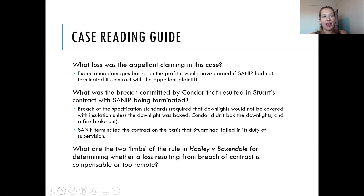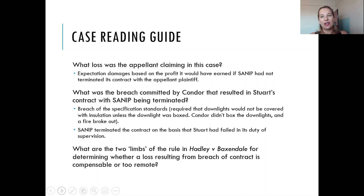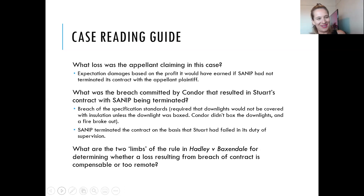What are the two limbs of the rule in Hadley and Baxendale for determining whether a loss resulting from a breach of contract is compensable or too remote? The first limb is if the loss arises naturally according to the usual course of things. The second limb is if the damage was supposed to have been in the contemplation of both parties at the time they made the contract — dealing with special circumstances known to the parties that bring the loss within their reasonable contemplation. Here, it was the second limb that was the key issue.